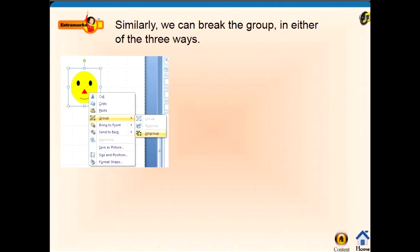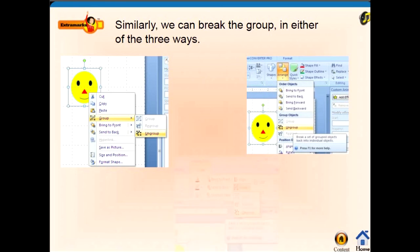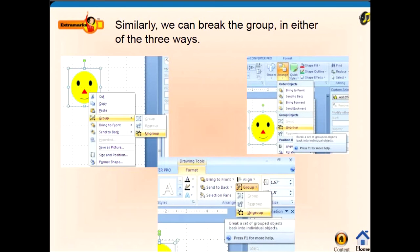Similarly, we can break the group in either of three ways: you can select Arrange then Ungroup, or go to Format then select Ungroup, or right-click on the image and select Ungroup.